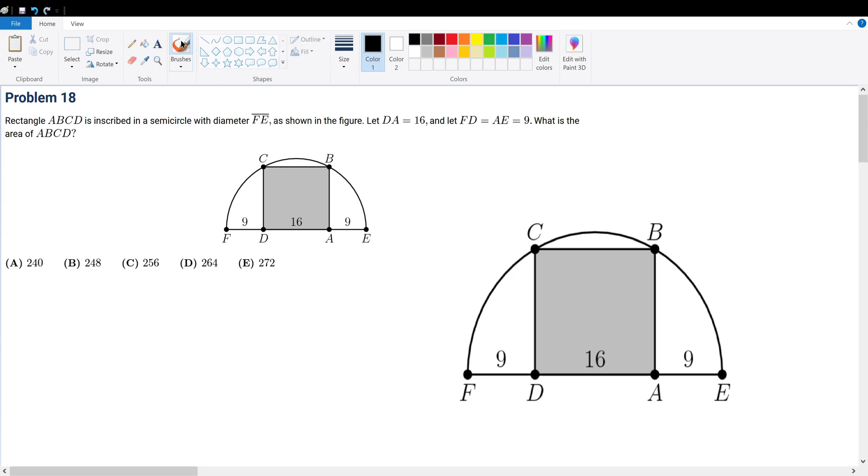Problem 18: Rectangle ABCD is inscribed in a semicircle with diameter FE as shown in the figure. DA equals 16, and FD equals AE, which equals 9. What is the area of ABCD?